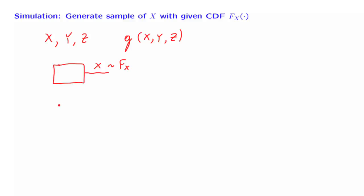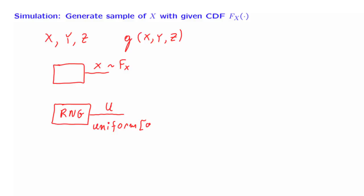Well, computers typically have a random number generator in them. Random number generators typically generate values that are drawn from a uniform distribution. So this gives us a starting point. We can generate uniform random variables, but what we want is to generate values of a random variable according to some other distribution.